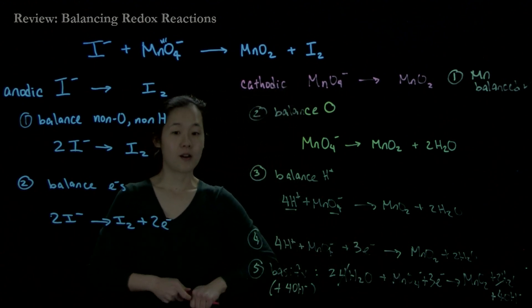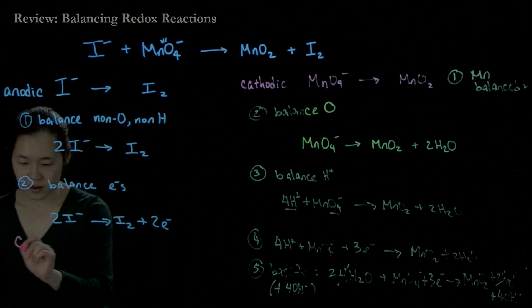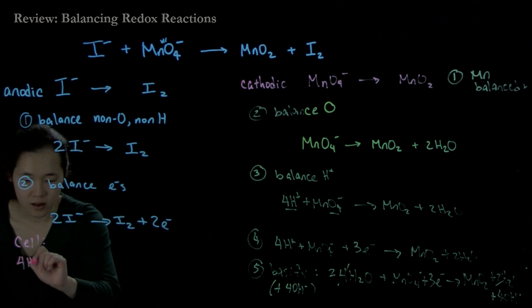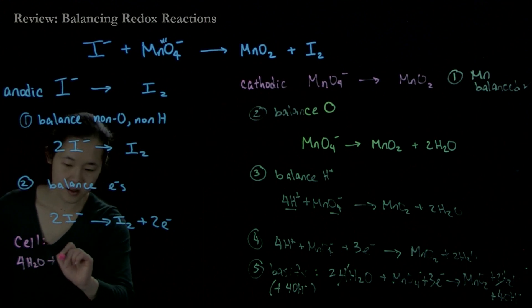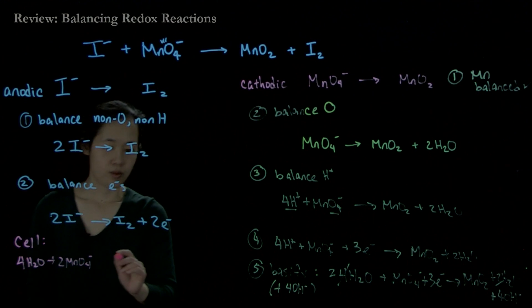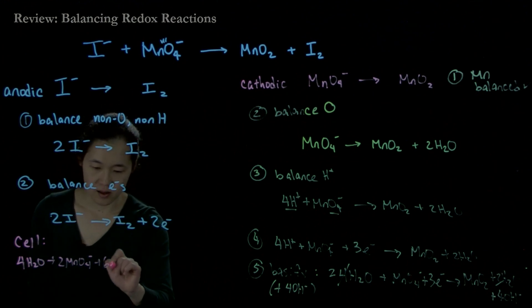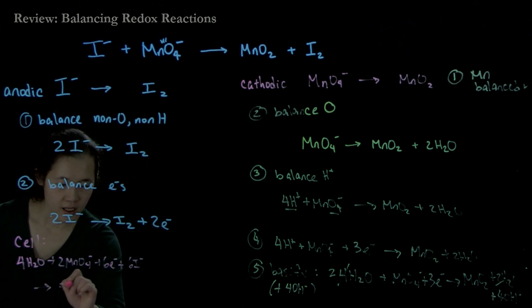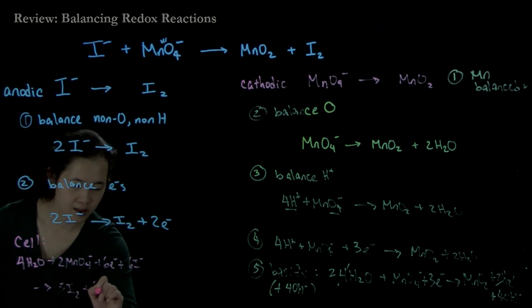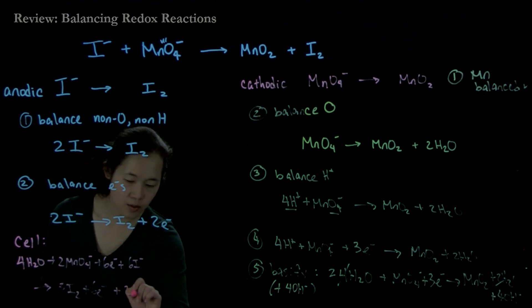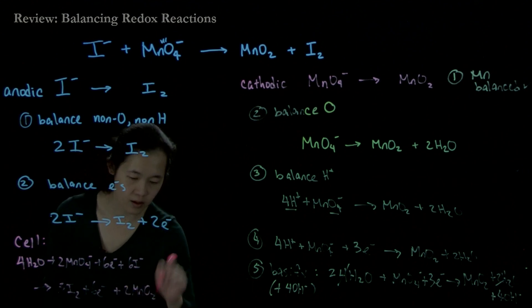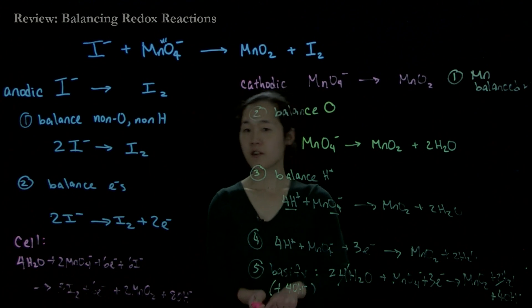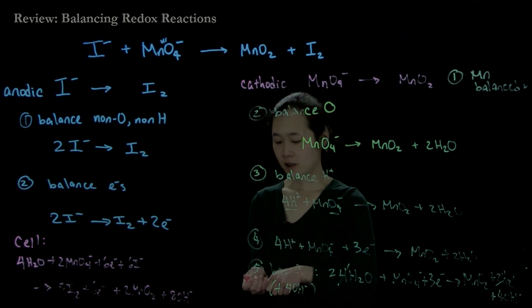Our final balanced overall cell equation is: 4H2O plus 2MnO4- plus 6I- goes to 3I2 plus 2MnO2 plus 8OH-. The six electrons cancel out on both sides. That is our balanced chemical equation that we'll use for this cell.